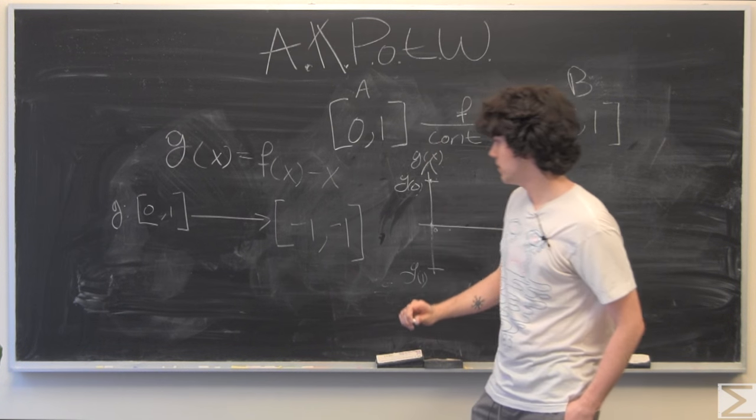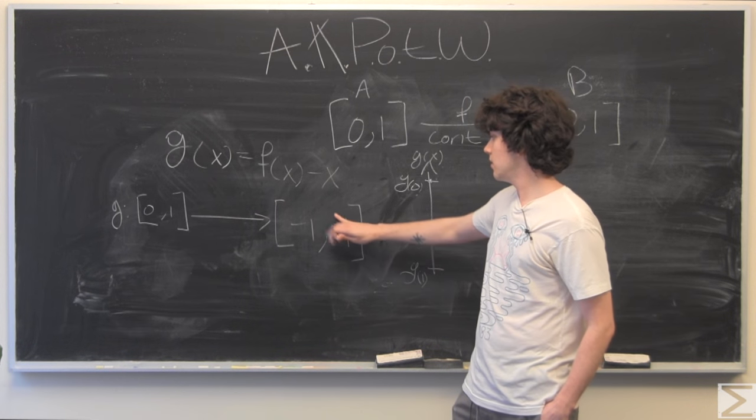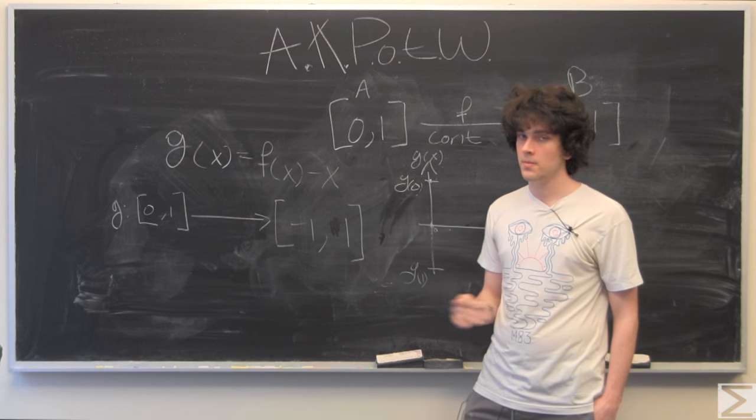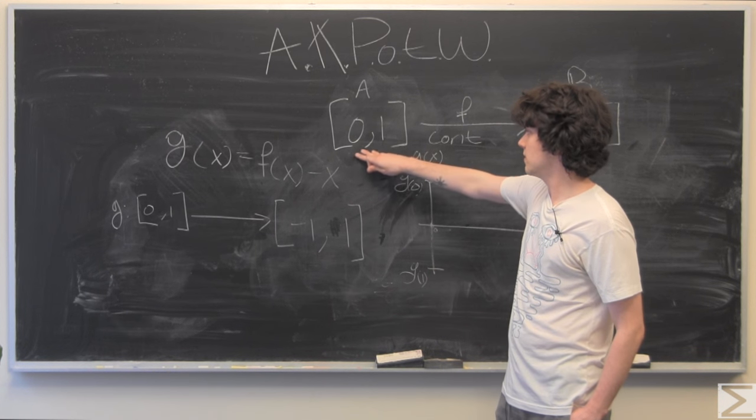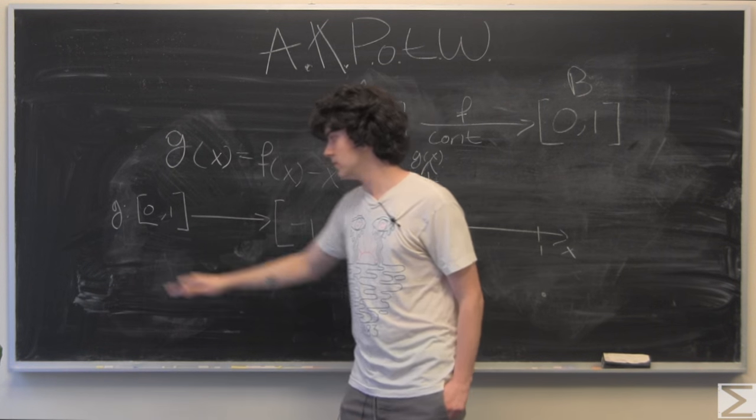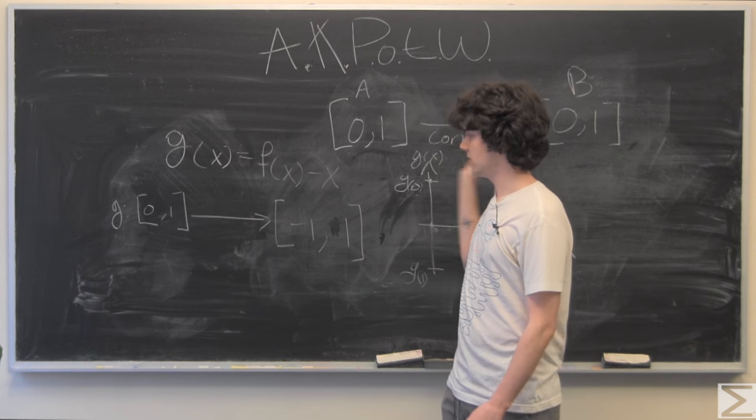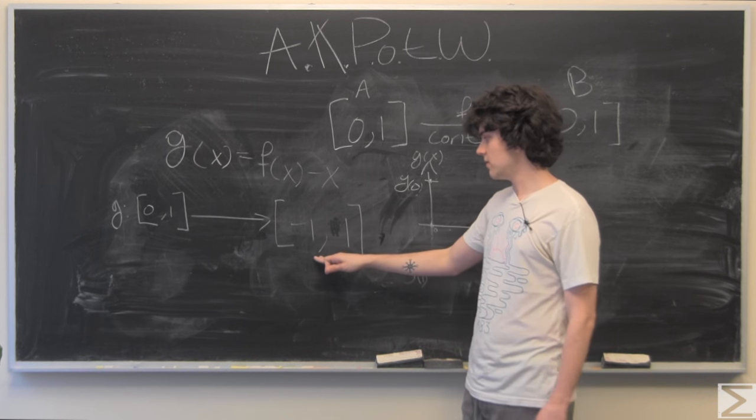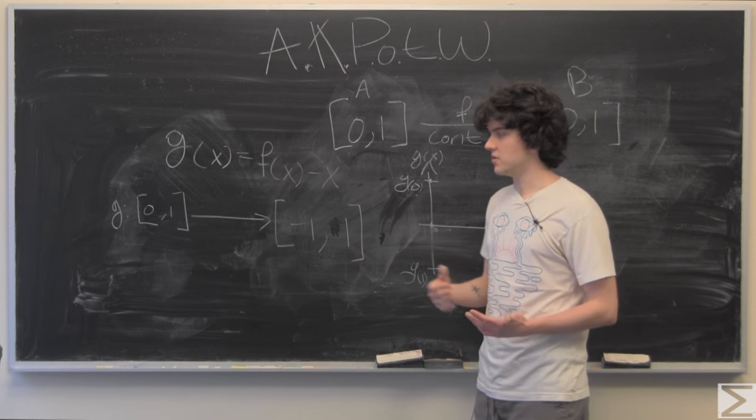So we see that g of x goes from [0,1] to [-1,1]. And of course, because these two sets are the same, those two intervals, this is a composition of these two.